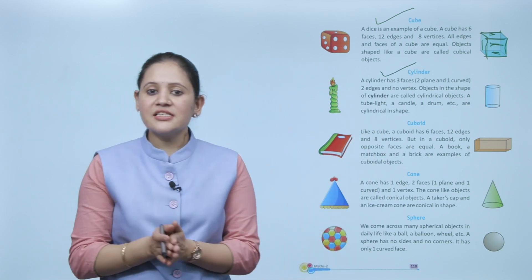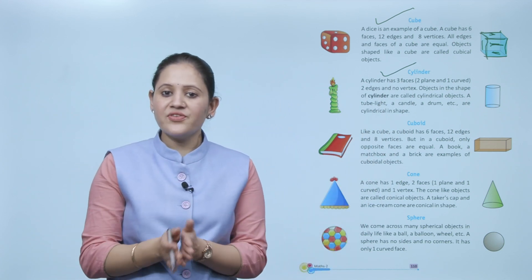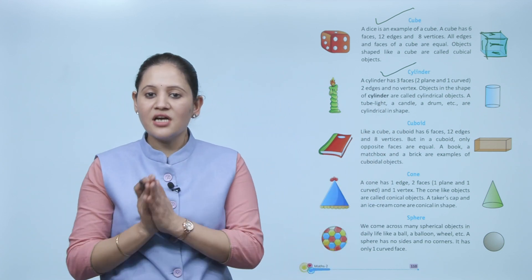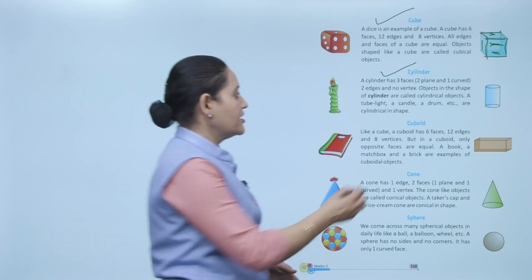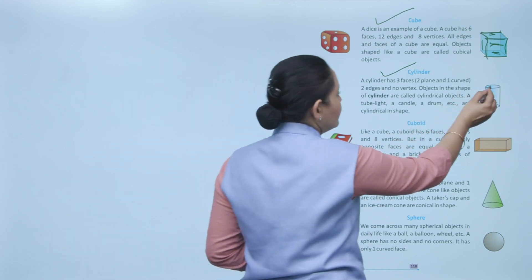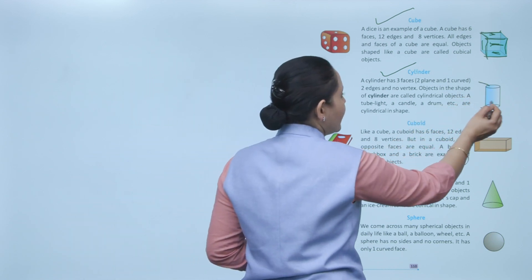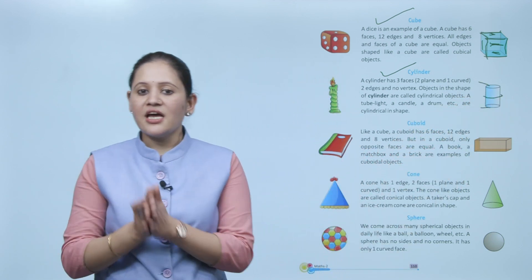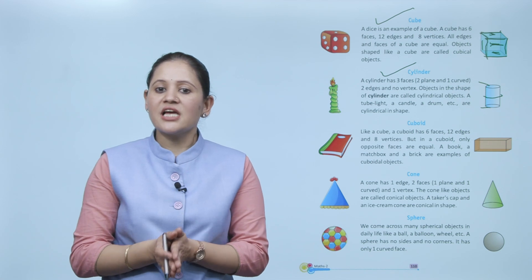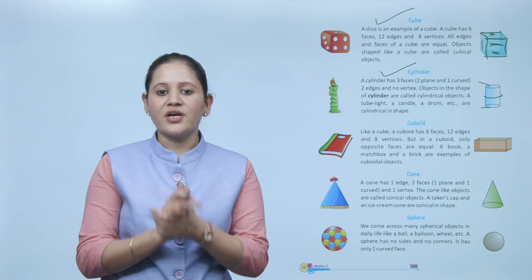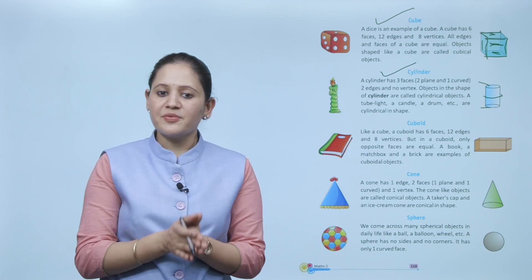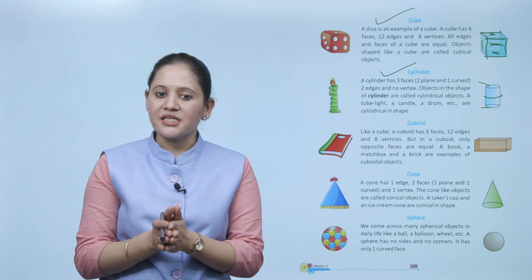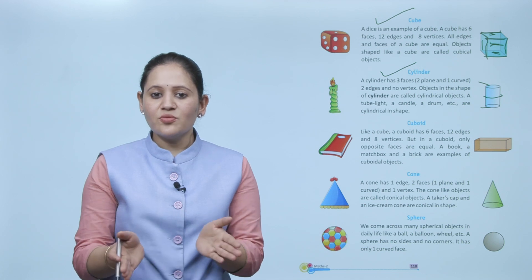A cylinder has three faces — two plane and one curved. It has two edges and no vertex. Objects with the shape of a cylinder are called cylindrical objects. A tube light, candle, drum, etc. are cylindrical shapes.